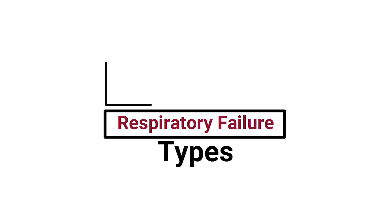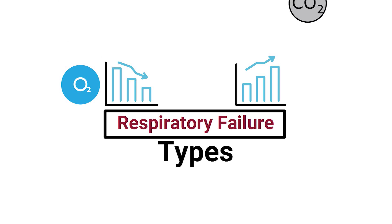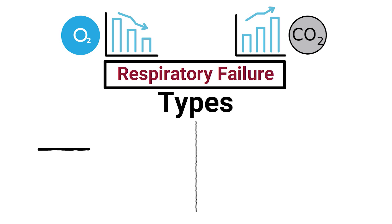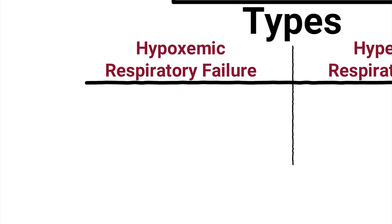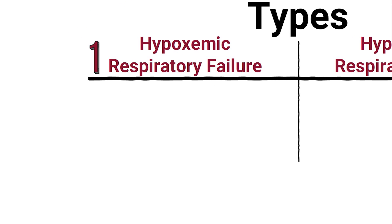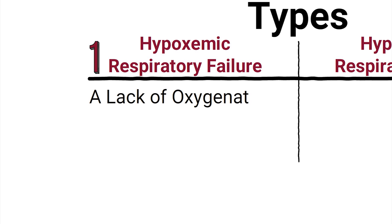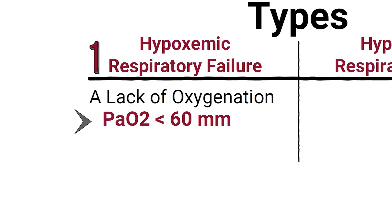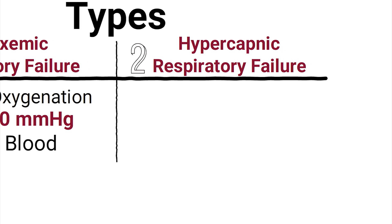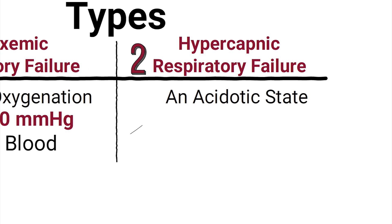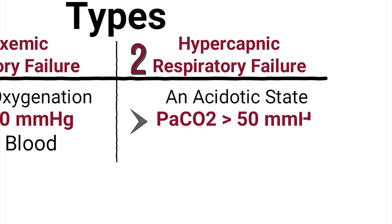There are two types of respiratory failure, caused by either a lack of oxygen or too much carbon dioxide. Hypoxemic respiratory failure, or Type 1, describes a lack of oxygenation where there is a PaO2 of less than 60 in arterial blood. Hypercapnic respiratory failure, or Type 2, describes an acidic state where there is a PaCO2 greater than 50 in arterial blood.